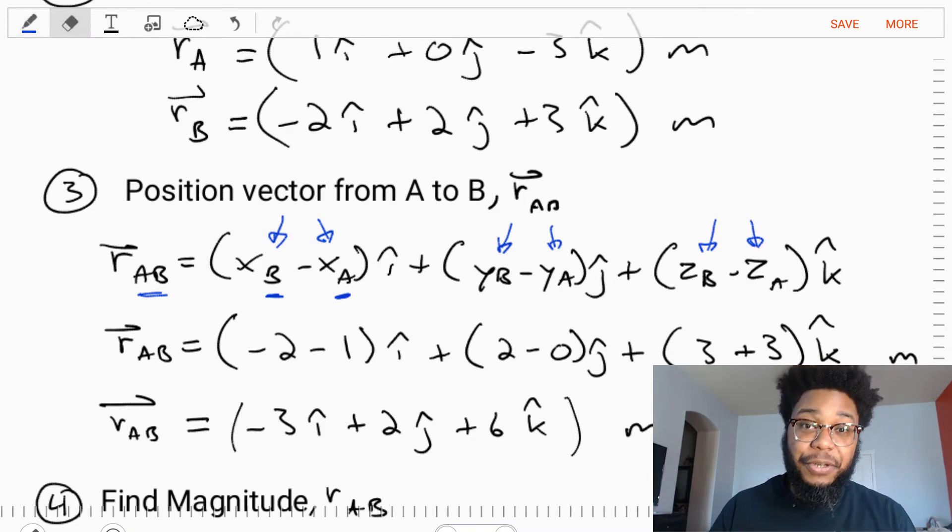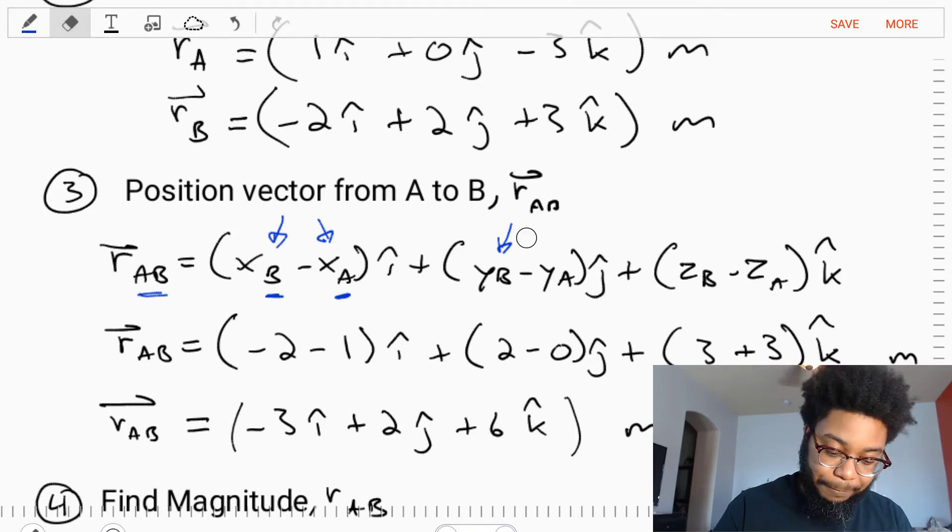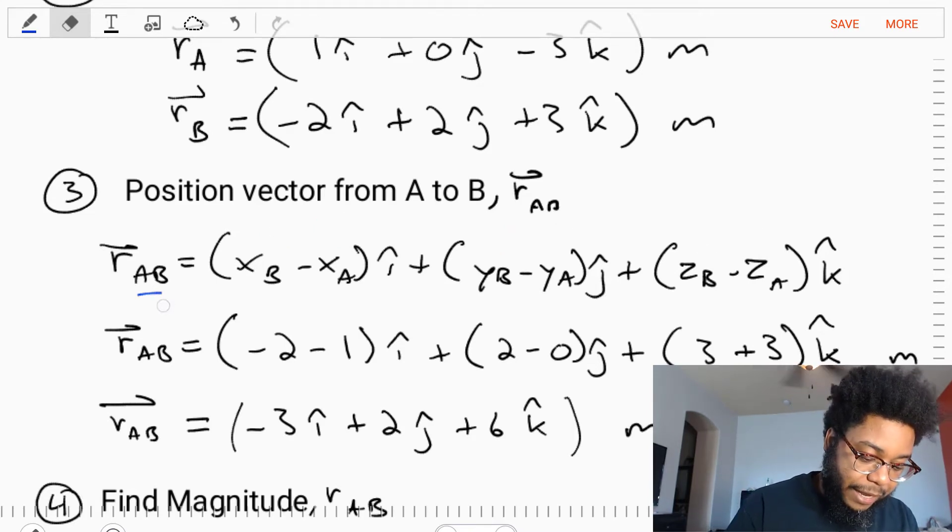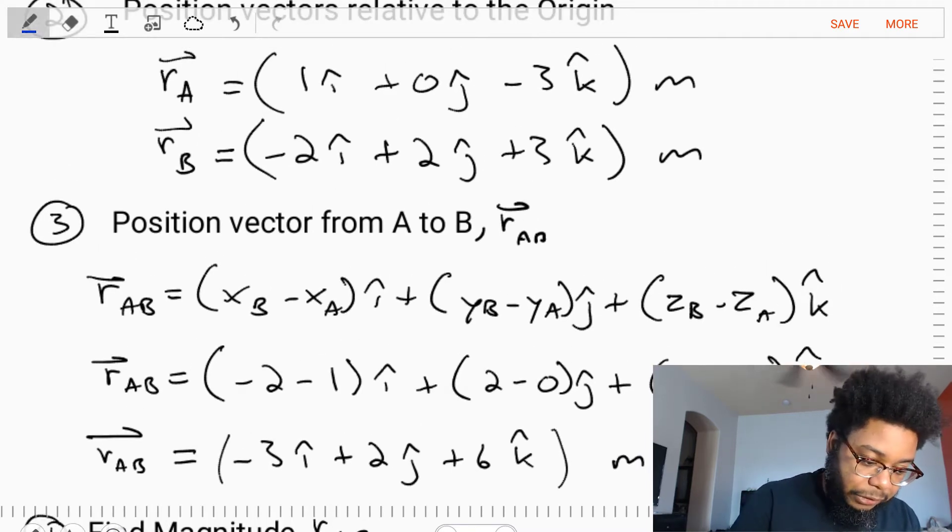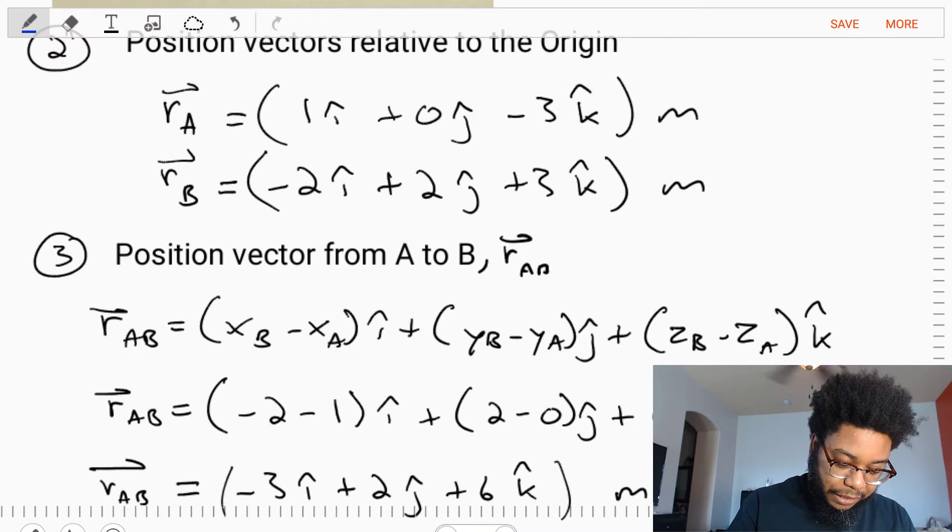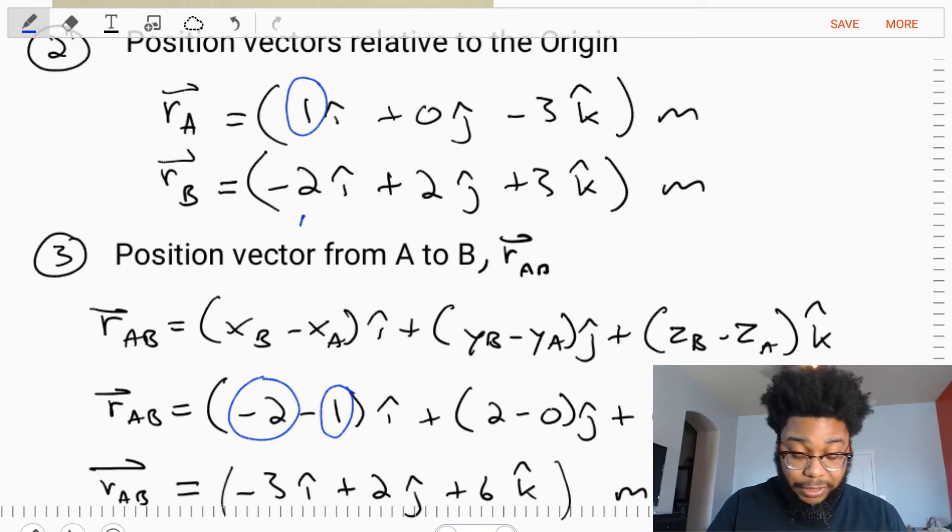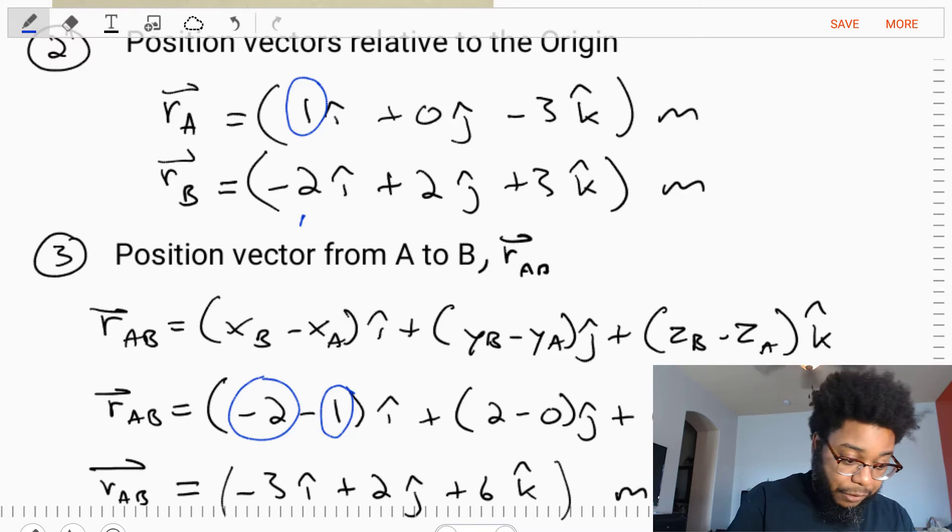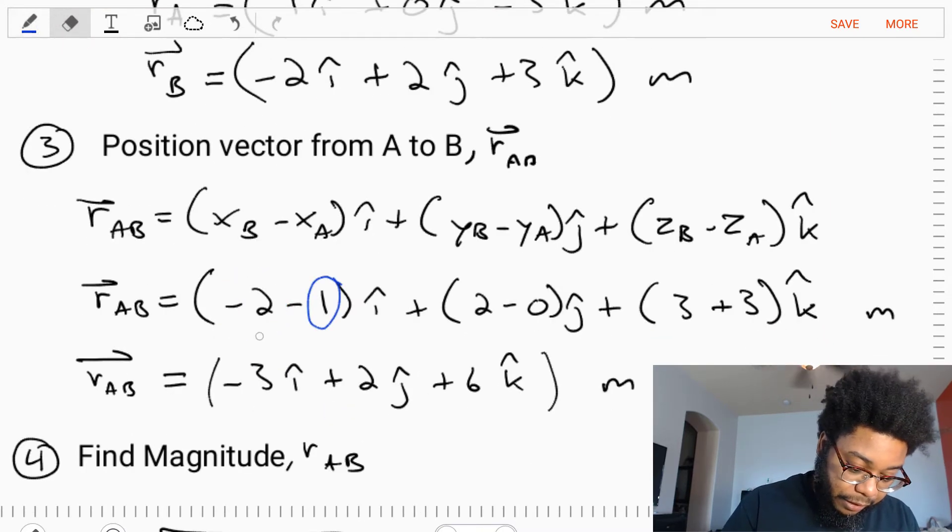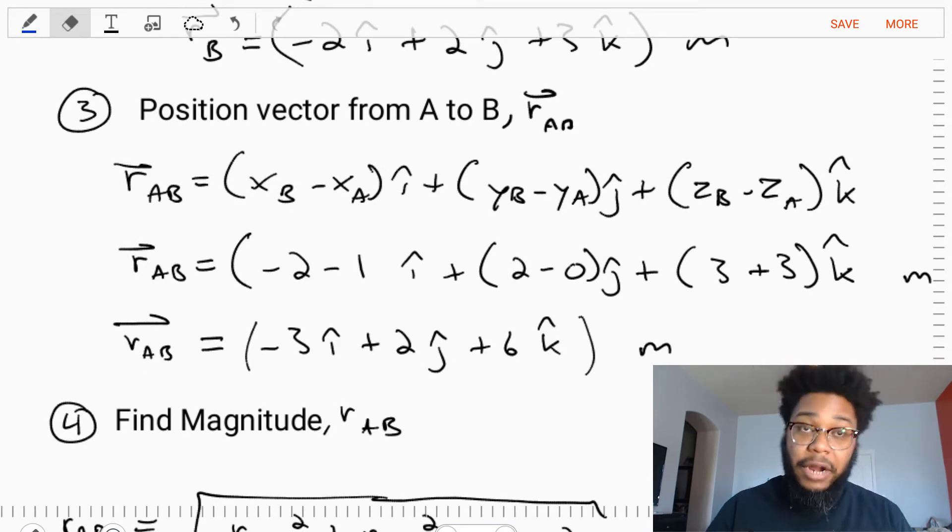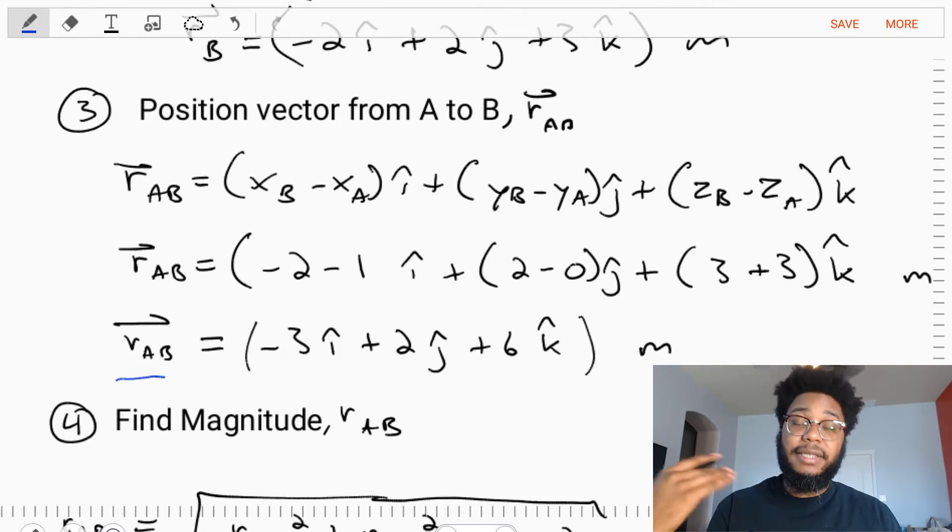Once we've figured that out, we look at our position vectors. The RBX term is negative 2 minus the RAX term, which is 1, and so on. We end up with our vector RAB equals negative 3i plus 2j plus 6k meters. Now we have the position vector from A to B.